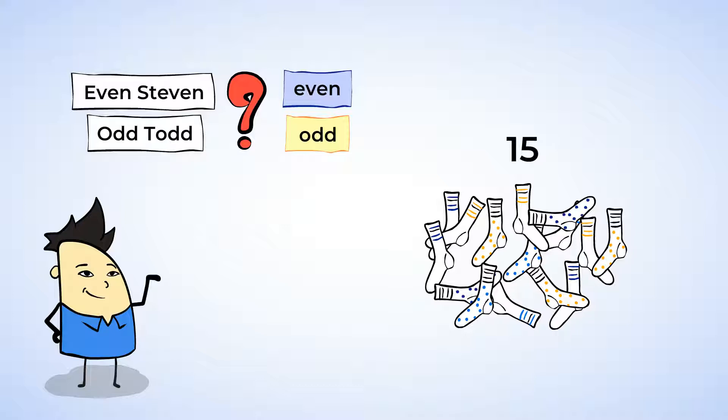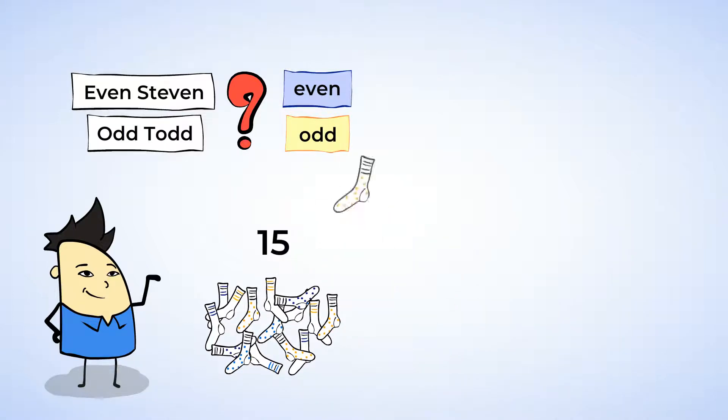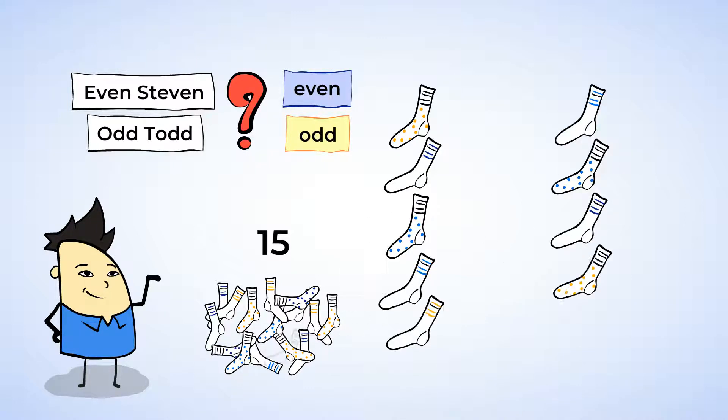We can figure out if a number is even or odd by splitting it into two groups. So, let's take the first sock and put it over here. Second sock we're going to put over here and we keep going back and forth until we used up all the socks.